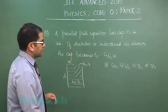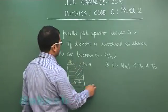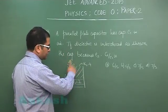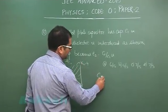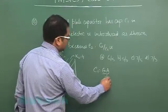A parallel plate capacitor has capacitance C1 in air. So the total area is A, separation is D in air. So the capacitance would be epsilon naught A by D.